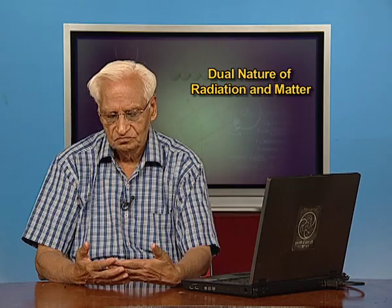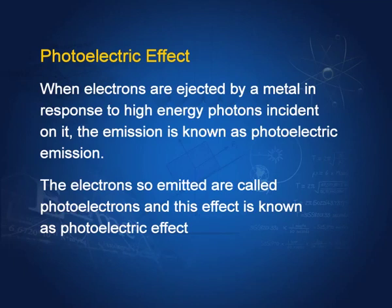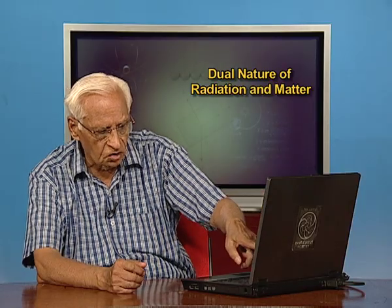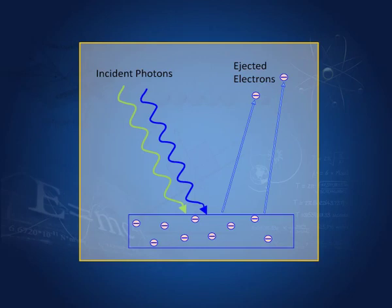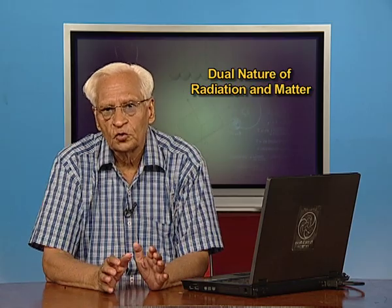The third way in which electrons can be given energy to come out of a metal is known as the photoelectric effect. In this case, we make photons incident on a piece of metal. These photons give energy to free electrons, and if the energy is sufficient, they come out. These ejected electrons are known as photoelectrons, and this effect is known as the photoelectric effect.